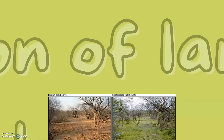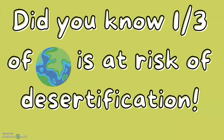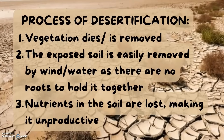Desertification is the degradation of land, making it drier and less productive. Did you know that one third of Earth is at risk of desertification? So, let's look at the process of desertification.